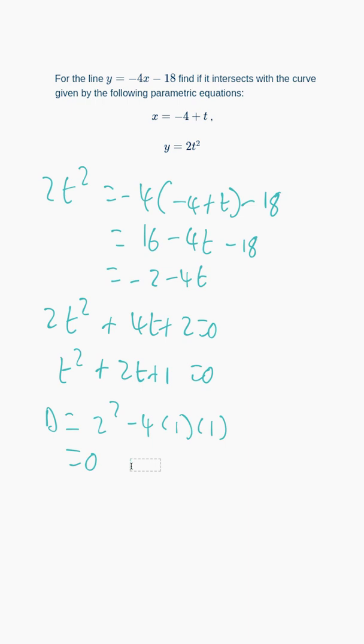And that is going to equal 0, so there is one intersection and we are done.